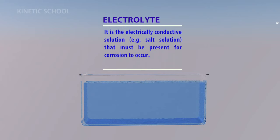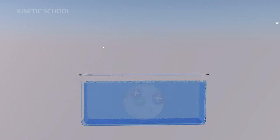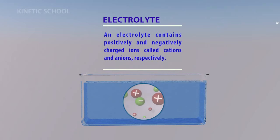Electrolyte: It is the electrically conductive solution that must be present for corrosion to occur. An electrolyte contains positively and negatively charged ions called cations and anions respectively.